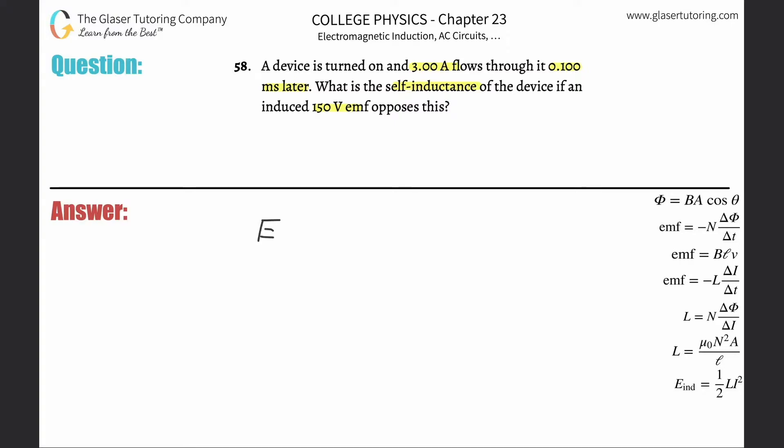So we're talking about self-inductance, so we have to look at this formula that the self-induced EMF will equal the negative inductance multiplied by the change in current divided by the change in time over which that current is changing.